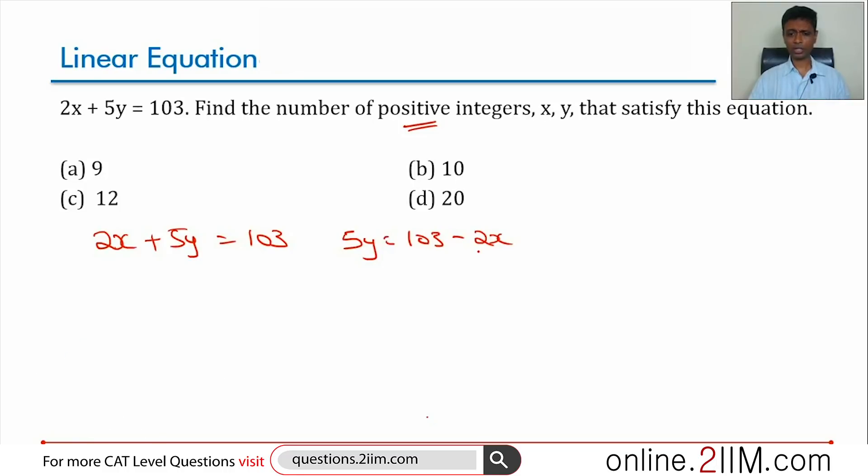The first value of y that works is when 5y will be equal to 95 or y equal to 19 and x equal to 4 works. Y is 19, x is 4. That will work because 5y will become a multiple of 5, 95 plus 2x, 8 will become 103.